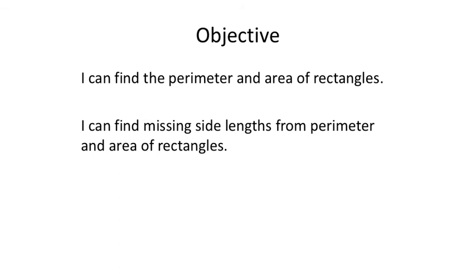After looking at the assignment, that's all the information you need for it. You can look at those three examples and piggyback off of them to find missing side lengths and to find perimeter and area. We met both objectives today, so now you should be able to start on assignment 10.4 on Canvas. Good luck — see you later.